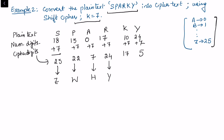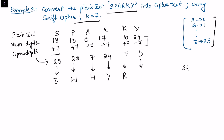Continuing: 10 + 7 = 17, and 24 + 7 = 31. Since 31 is congruent to 5 mod 26 (31 divided by 26 gives remainder 5), we write 5. The cipher digits are: 25, 22, 7, 24, 17, 5, which correspond to the letters Z, W, H, Y, R, F. So the cipher text for 'sparky' is ZWHYRF.